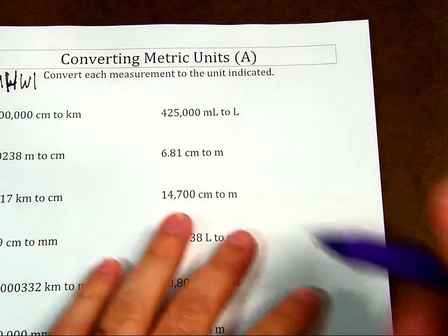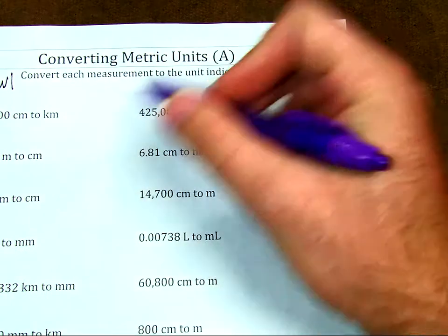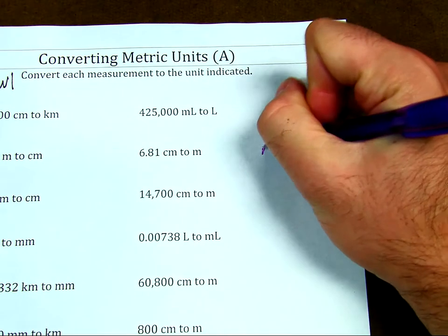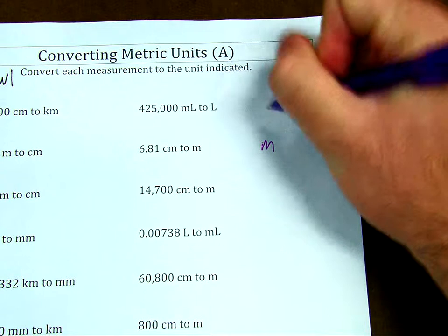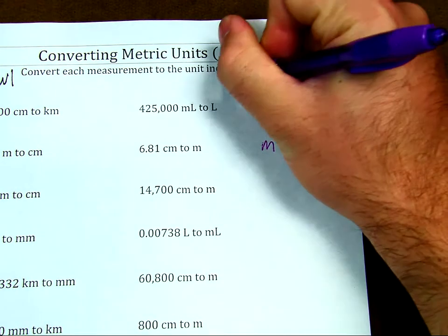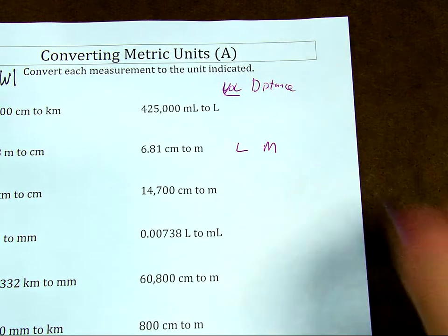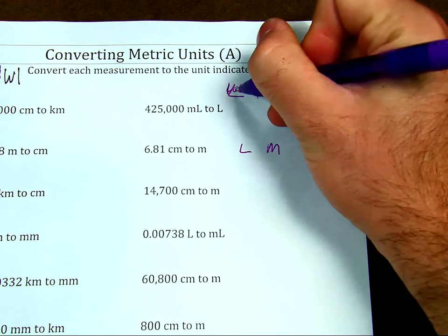I'm going to take some notes on the side so I remember what I'm doing. So I know that my base for the metric units, when I'm talking about distance, is going to be meter. Unless I'm talking about distance, I'm talking about volume, it's going to be the liter. So distance is meter, volume is liter.